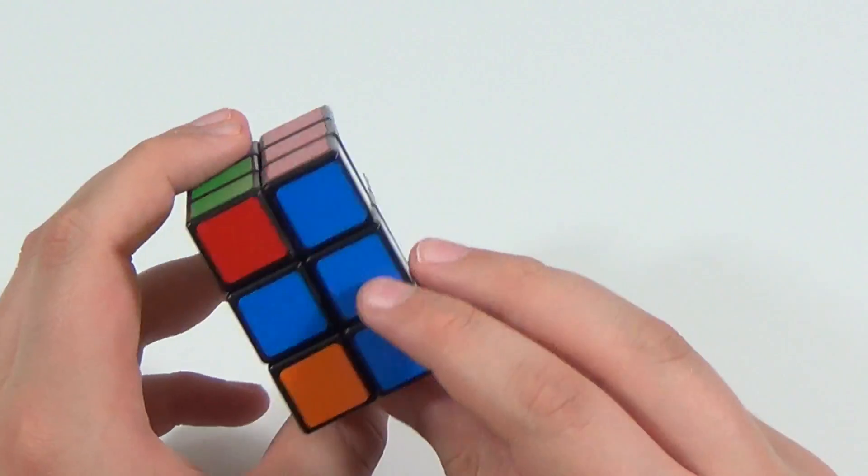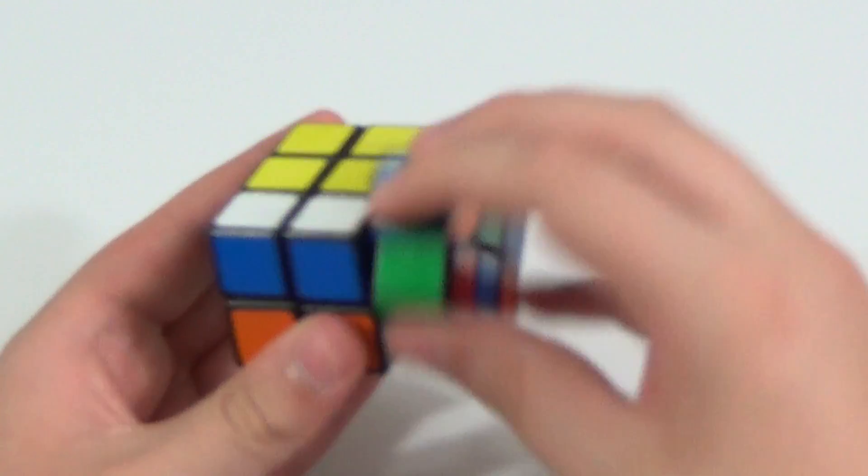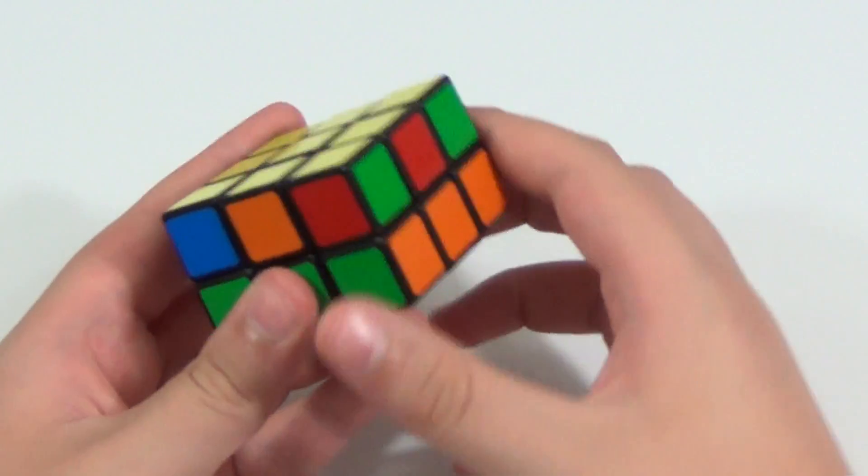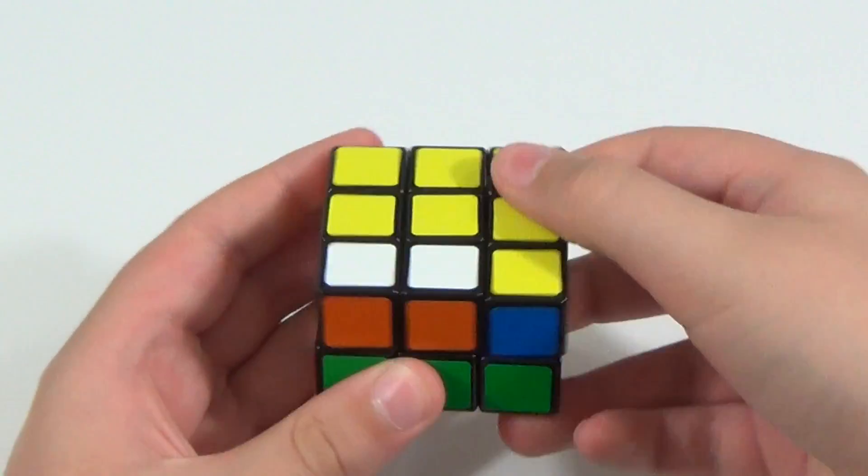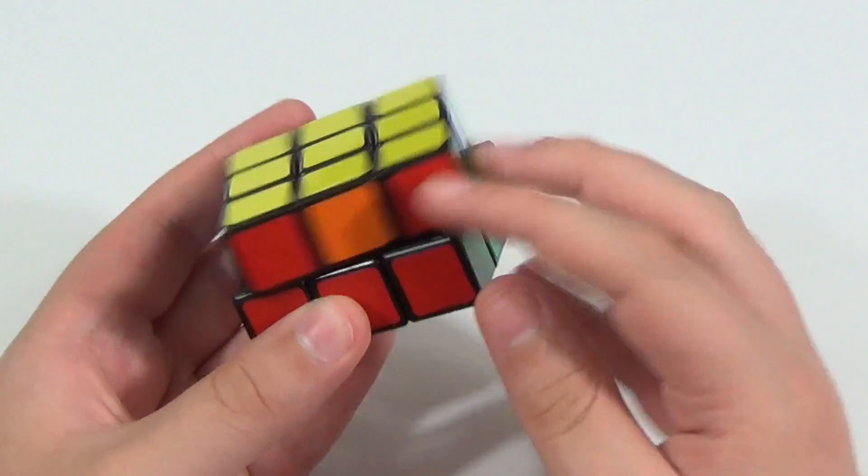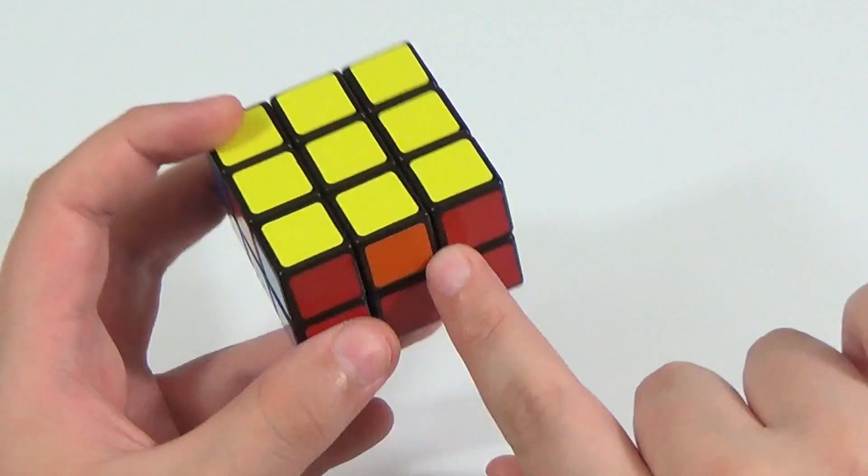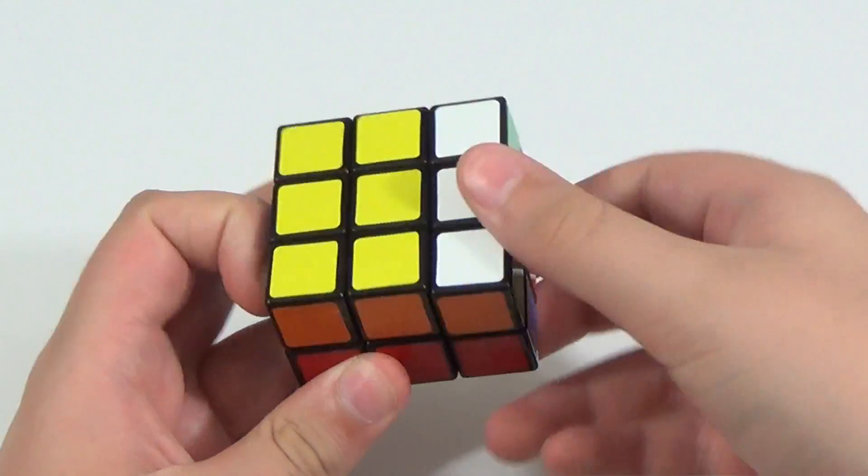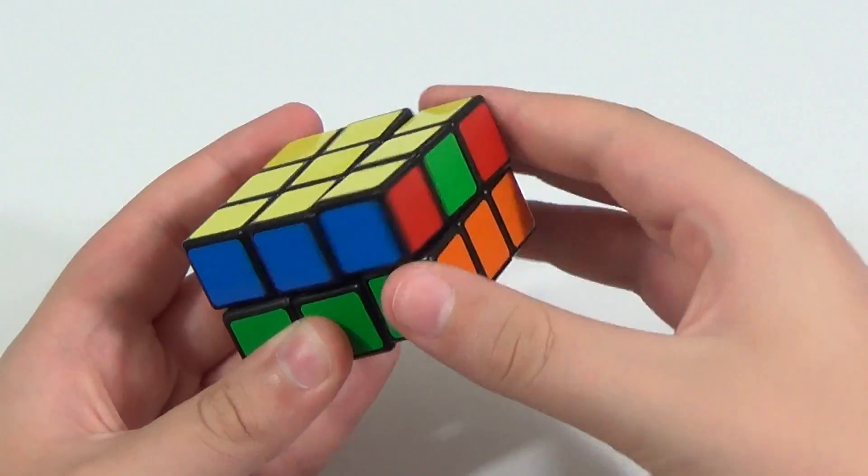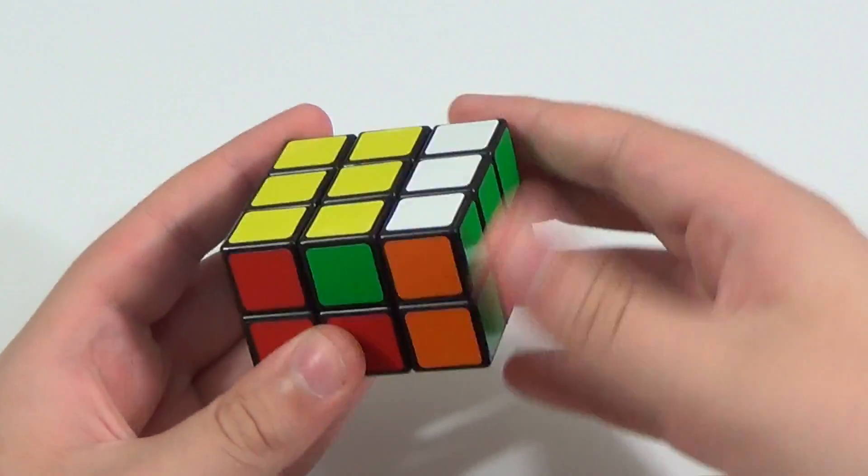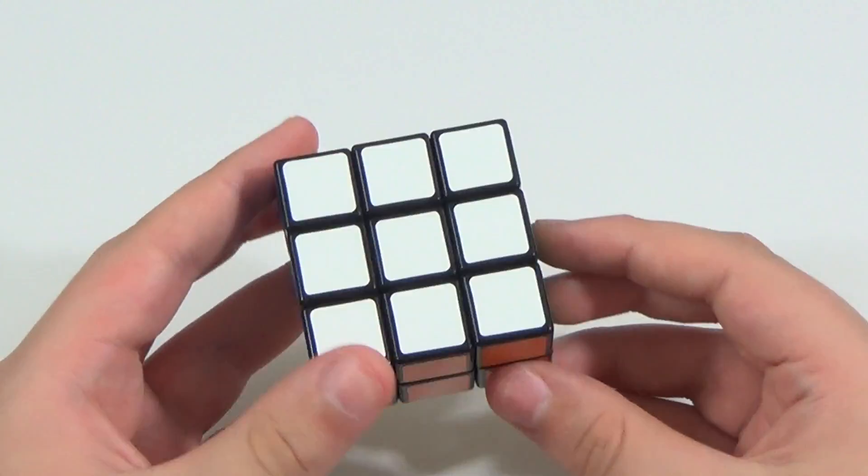So then the first thing we look for are headlights. In this case, we don't have headlights. So what we can just do is do the corner swap algorithm from any angle really. And now we will have headlights. So we can put those to the left side and do the corner swap algorithm once more, just like that. And then looking around, we actually have the same case for edges we did last time, so we'll do it the same way. We can put this orange piece across there by doing an opposite edge swap. And we'll do the same for this blue piece, put it over there, just like that. And then we have an adjacent edge swap. And there we go.